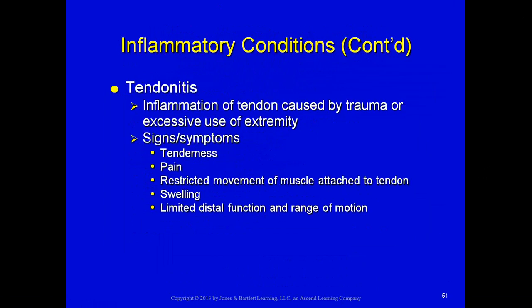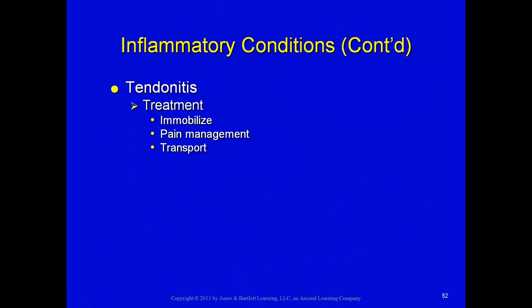Tendinitis is an inflammation of the tendon caused by trauma or excessive use of an extremity. Signs and symptoms include tenderness, pain, restricted movement of the muscle attached to the tendon, swelling, limited distal function, and limited range of motion. One of the most common examples is tennis elbow. Treatment is to immobilize, administer pain meds if there is significant pain, and transport.